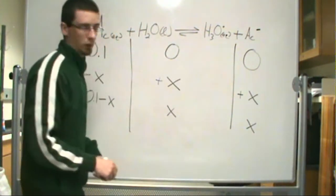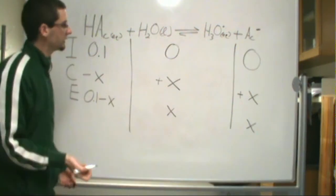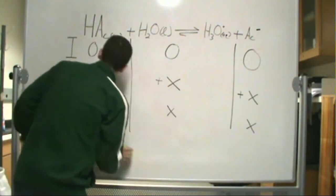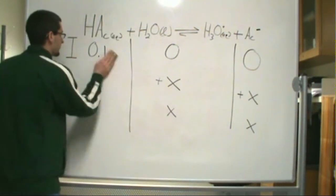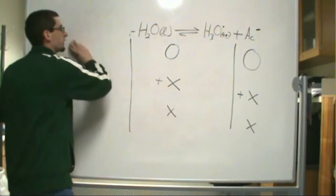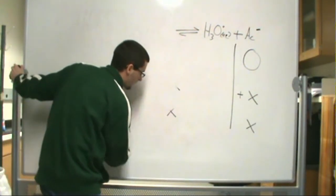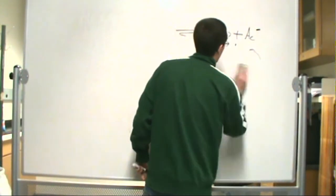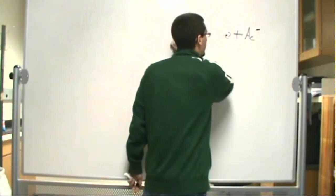Alright, so what do we do beyond this point? Next, we toss them into our Ka expression, or equilibrium expression. And after we do that, we just have to use some algebraic manipulation in order to solve for our concentrations.